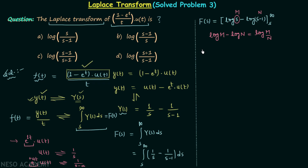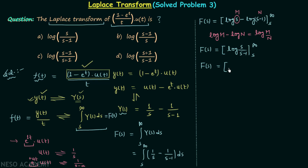In the next step we write F(s) = log(s / (s-1)) evaluated from s to infinity. Putting in the upper limit gives log(∞/∞), which is an undefined form. We solve it using the limit as s tends to infinity of log(s / (s-1)). Rewriting s-1 as s(1 - 1/s), the s cancels, so we can now put in the lower limit s to get log(s / (s-1)).